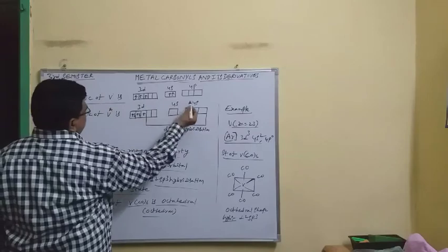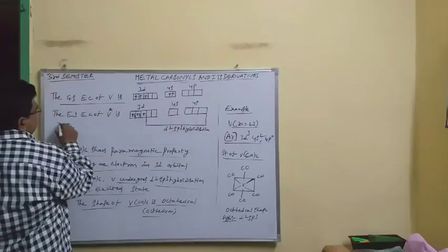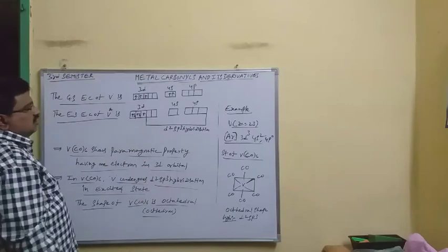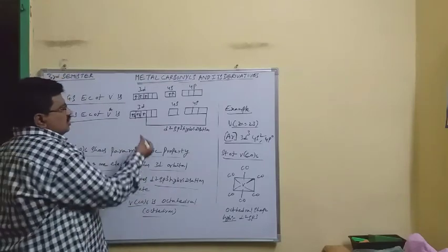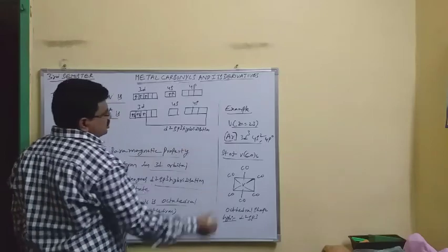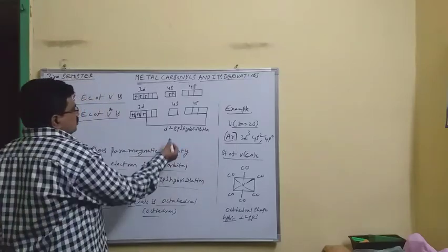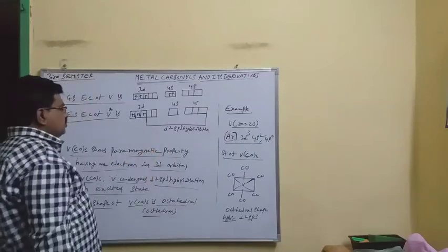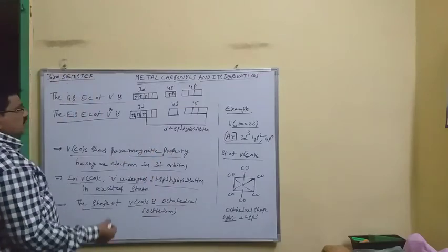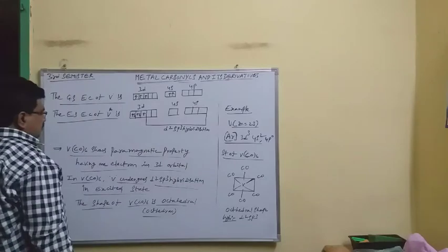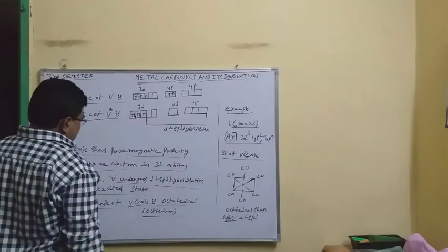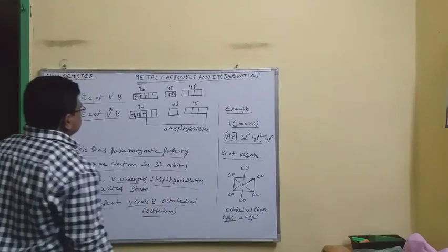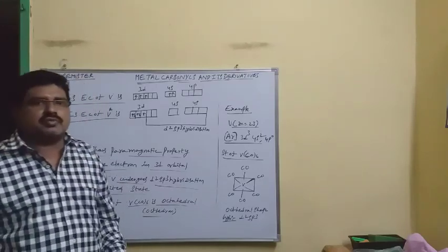To recall: the ground state electron configuration of vanadium is 3d3 4s2. In the excited state, this gives two electron pairs and one single electron, leading to D2sp3 hybridization. This results in the paramagnetic property of vanadium hexacarbonyl. The shape of vanadium hexacarbonyl is octahedral.